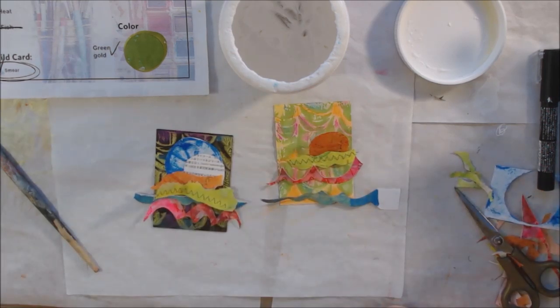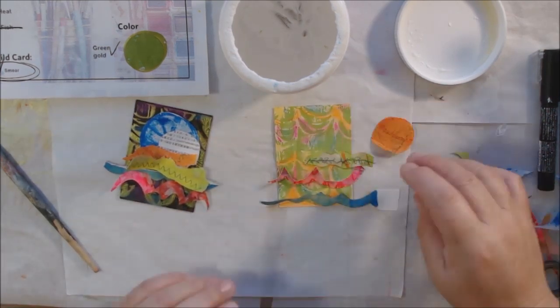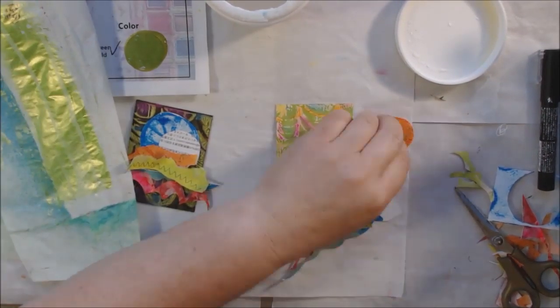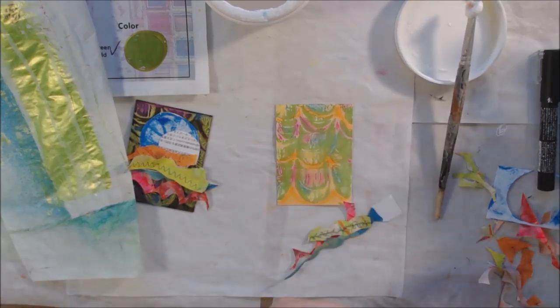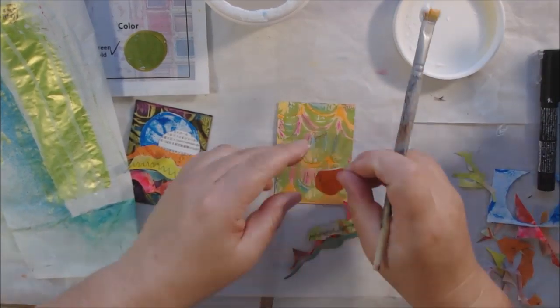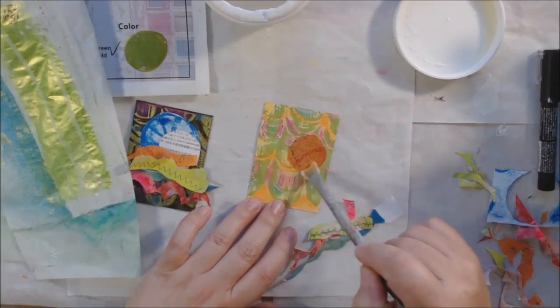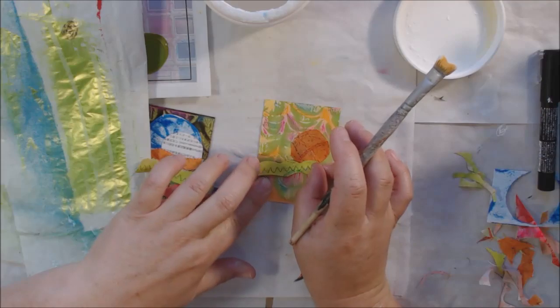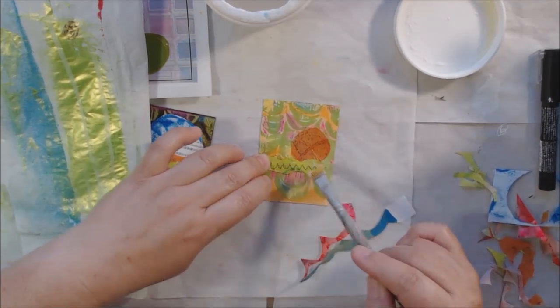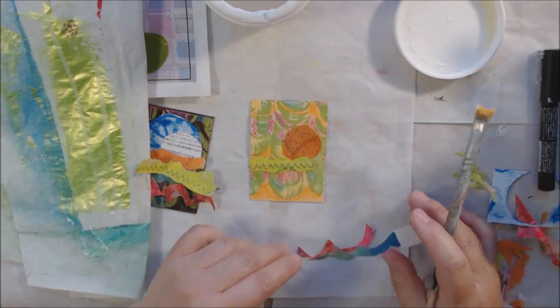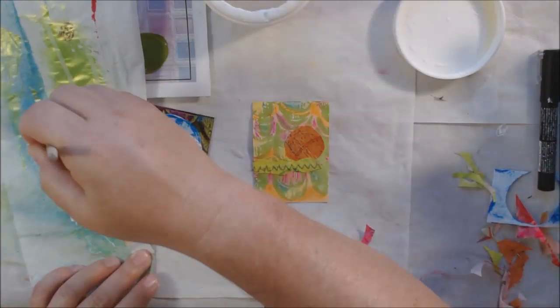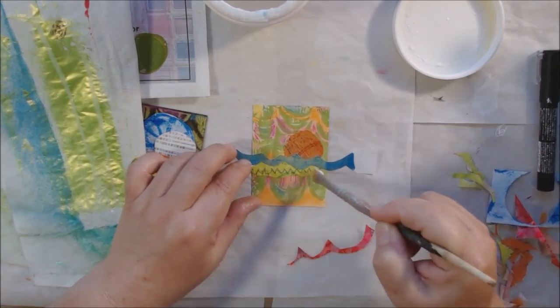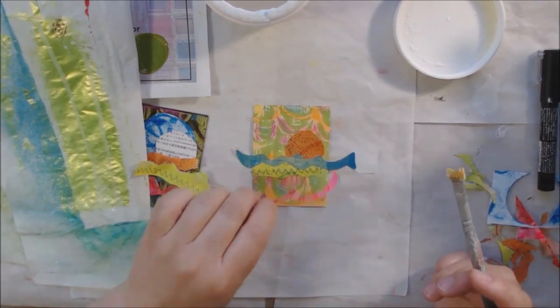I'm going to glue them down. I've got some Liquitex matte gel medium and I'm using it carefully, mostly putting the glue on my scrap piece of paper and onto the backs, then pressing them down, trying not to disturb that pastel chalk because it will move and get removed if I rub over it.